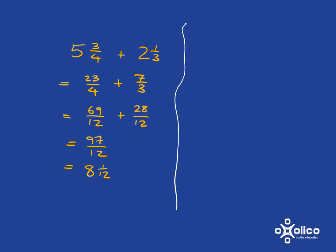Now the other method we could use here is to notice that what we have is 5 and 3/4, which is made up of 5 plus 3/4, and we've got 2 and 1/3, so it's 2 plus 1/3.